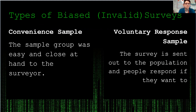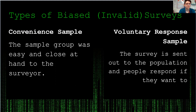The other type of biased survey is a voluntary response sample. This is when the survey is sent out or presented to the population and people respond if they want to. For example, if I own a magazine company and I want a survey completed to know what season people like best and I ask people to fill it out and mail it back, that's voluntary response — people only fill it out if they want to and they do not have to complete or send back the survey.